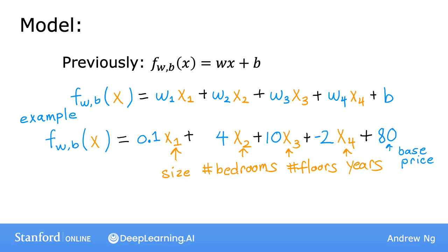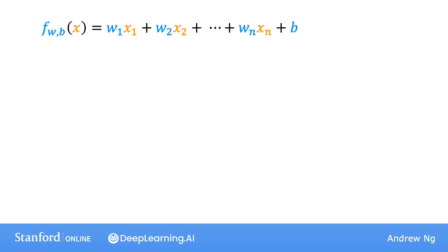In general, if you have n features, then the model will look like this. Here is the definition of the model with n features. What we're going to do next is introduce a little bit of notation to rewrite this expression in a simpler but equivalent way.